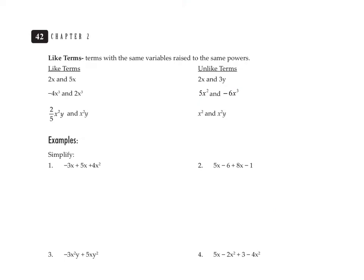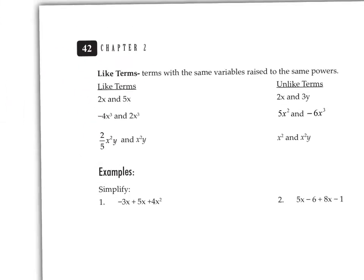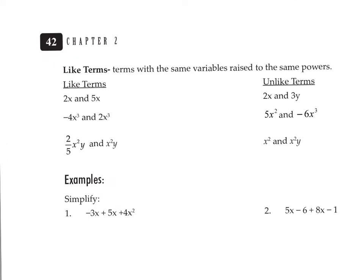On the third page, we're going to start talking about like terms because this has to do with simplifying. Like terms are terms with the same variable raised to the same power. For example, 2x and 5x are like terms because they both have x with the same exponent. But 2x and 3y are not like terms — they don't have the same variable. Negative 4x cubed and 2x cubed are like terms. But 5x squared and negative 6x squared are not like terms — the exponents are different. Also, two-fifths x squared y and x squared y are like terms, but x squared and x squared y are unlike terms because one has a y and the other doesn't.